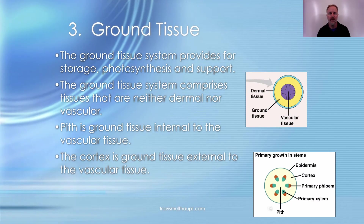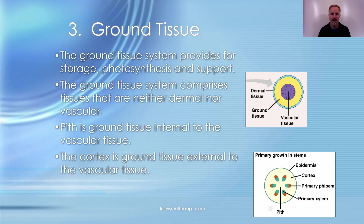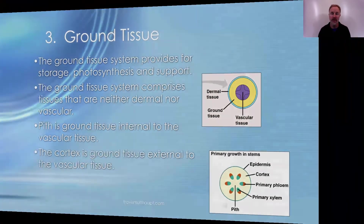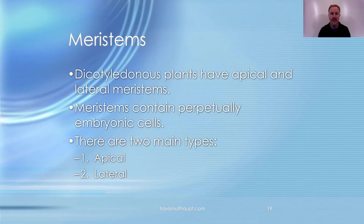The ground tissue provides storage, support, and photosynthesis — it's neither dermal nor vascular tissue. The pith refers to anything internal to the vascular tissue, and the cortex is anything external to it.